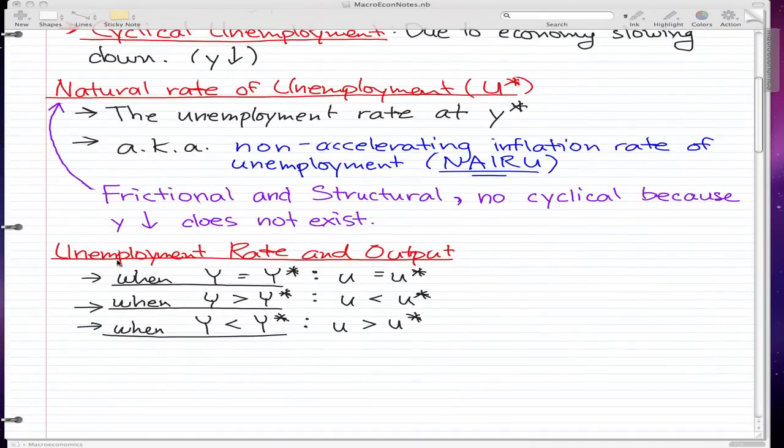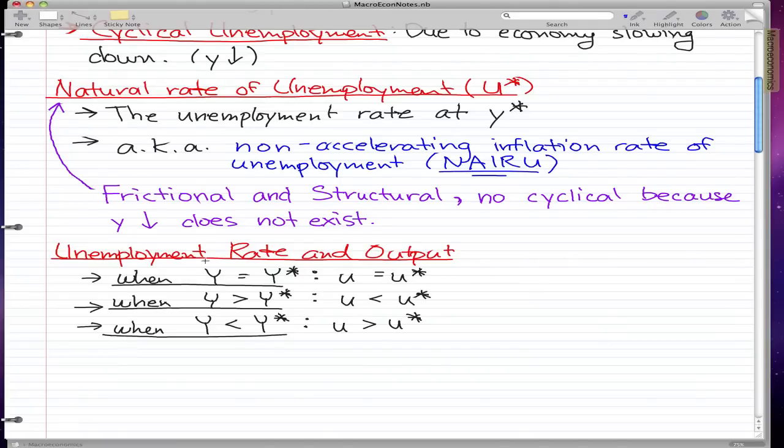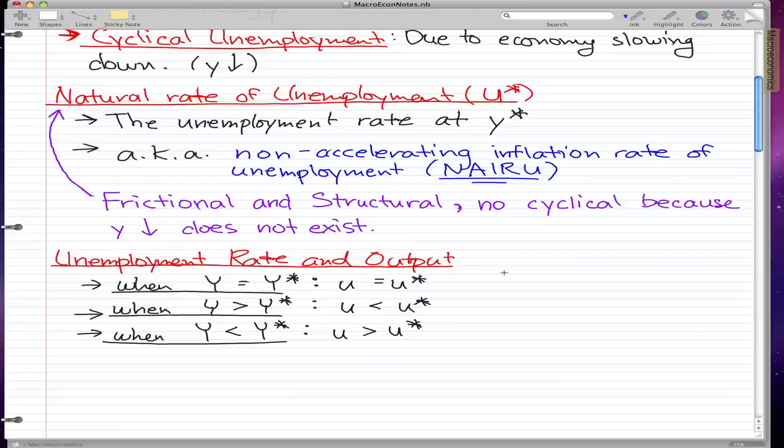Now the last thing I want to talk about is unemployment rate and output. When our output is equal to the equilibrium output then the unemployment rate is equal to the natural rate of unemployment and this is normal.